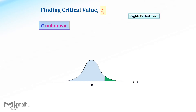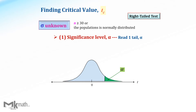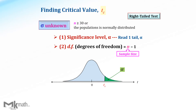First, find the t-critical value for a right-tailed test. There are two steps to find it. Before starting, check to see if the population standard deviation sigma is given or not, and check that either the sample size is greater than or equal to 30 or the population is normally distributed. Step 1: identify the significance level alpha as a one-tailed area. Step 2: find the degrees of freedom by subtracting one from the sample size, then look up the table.